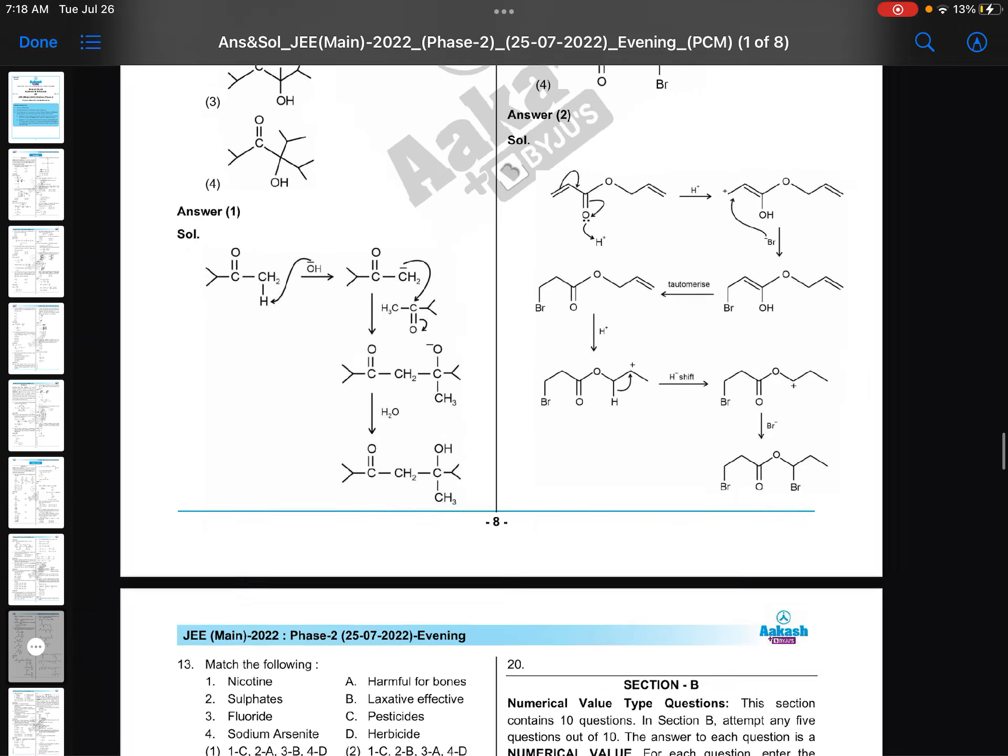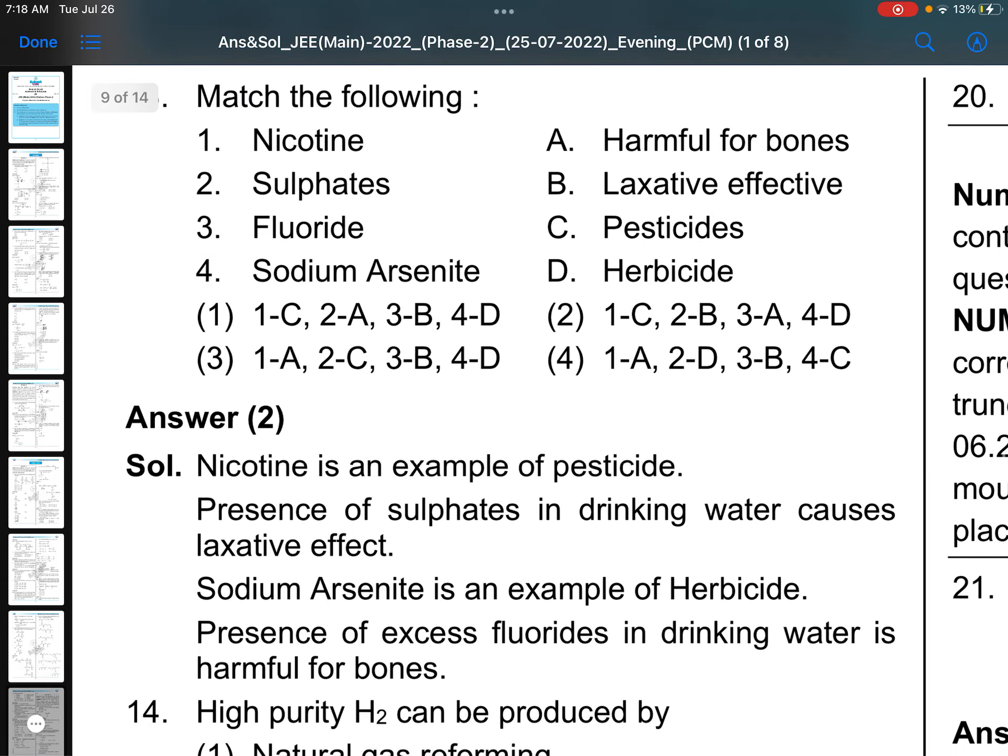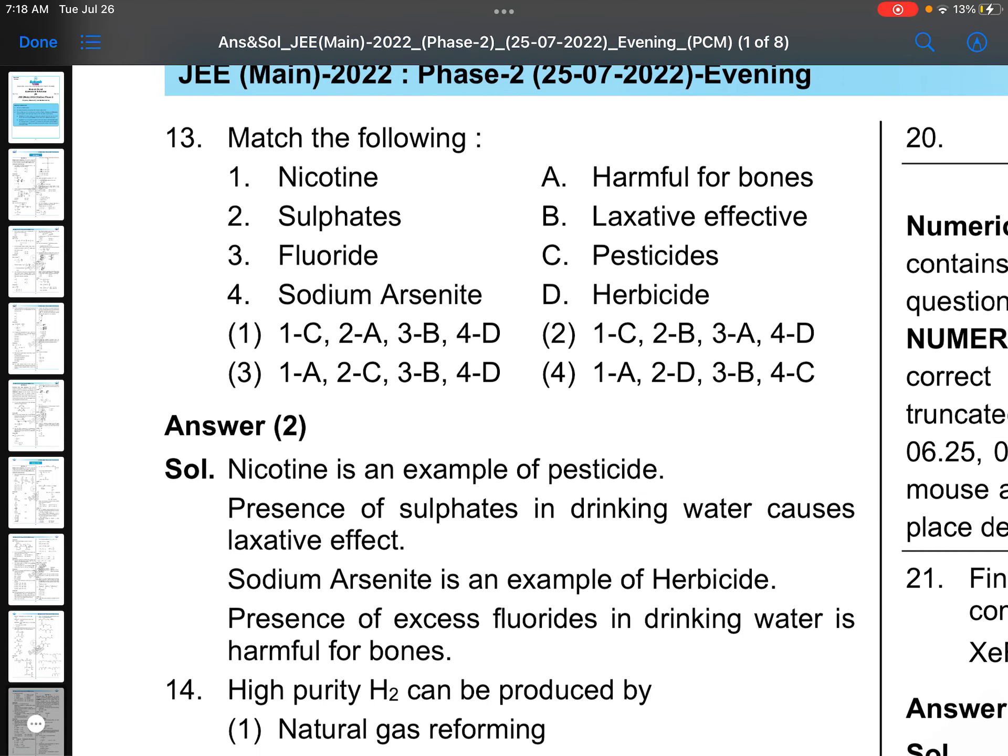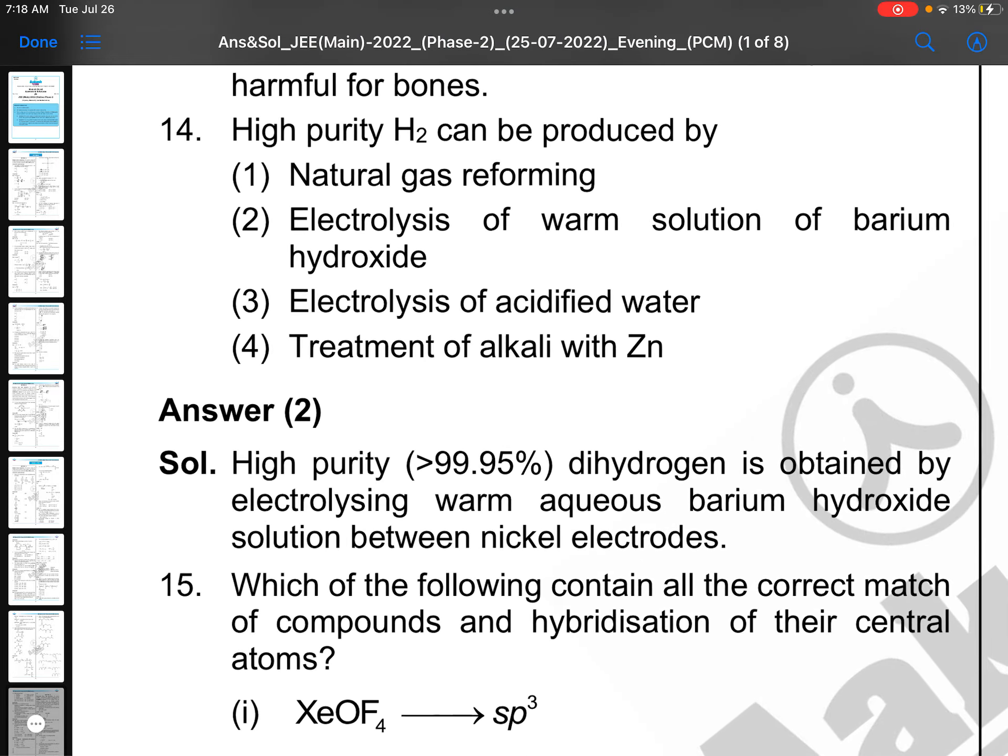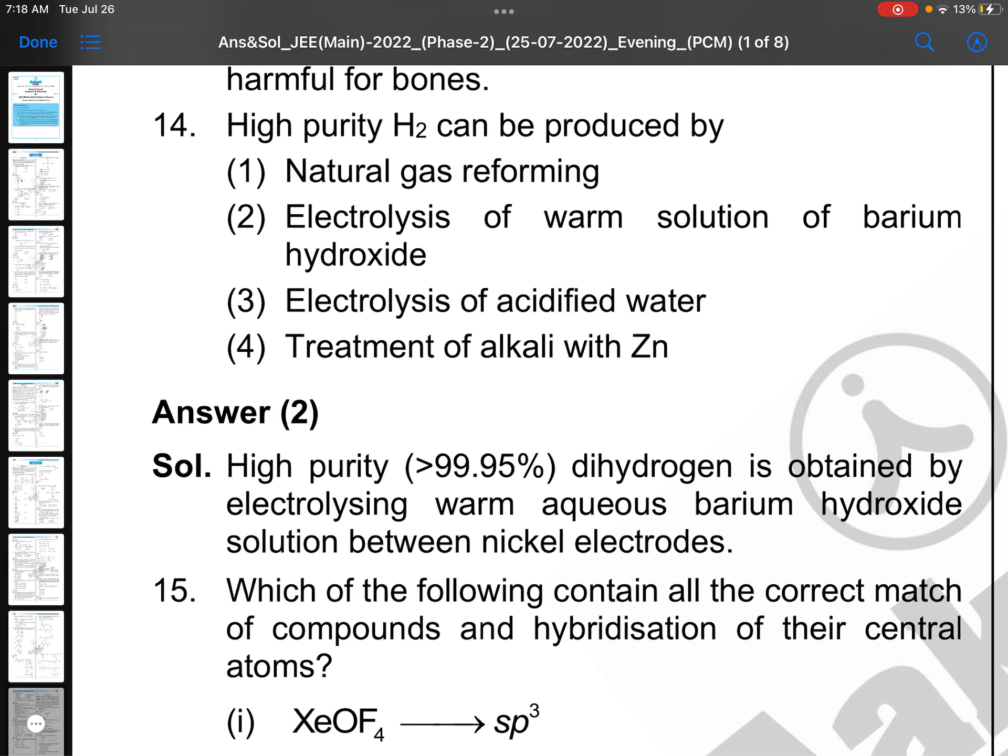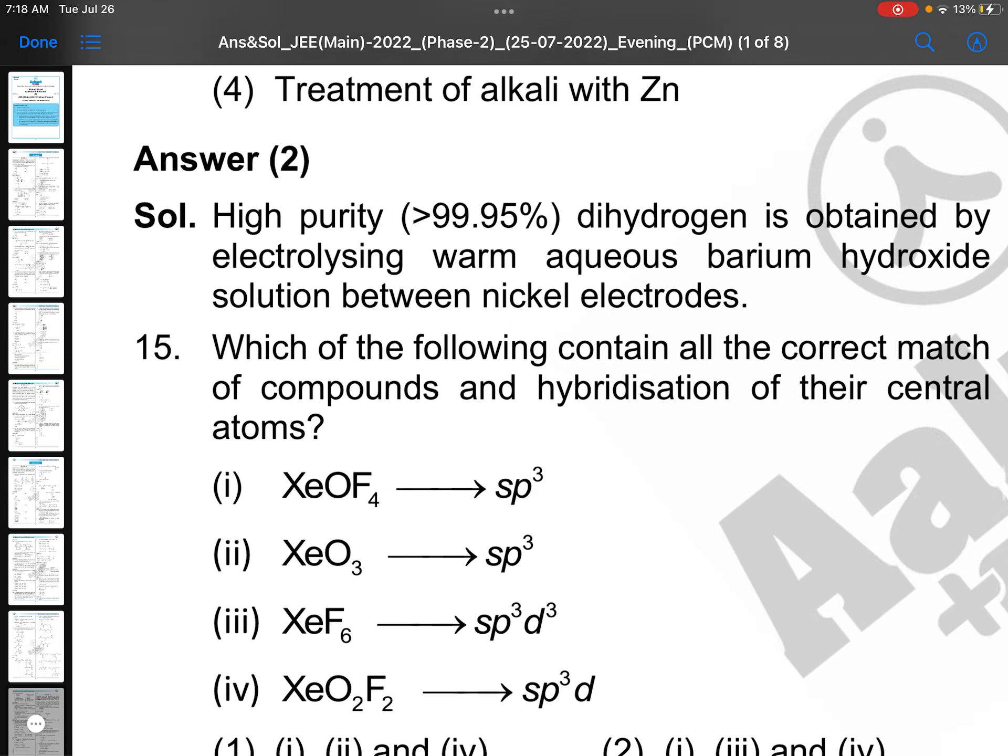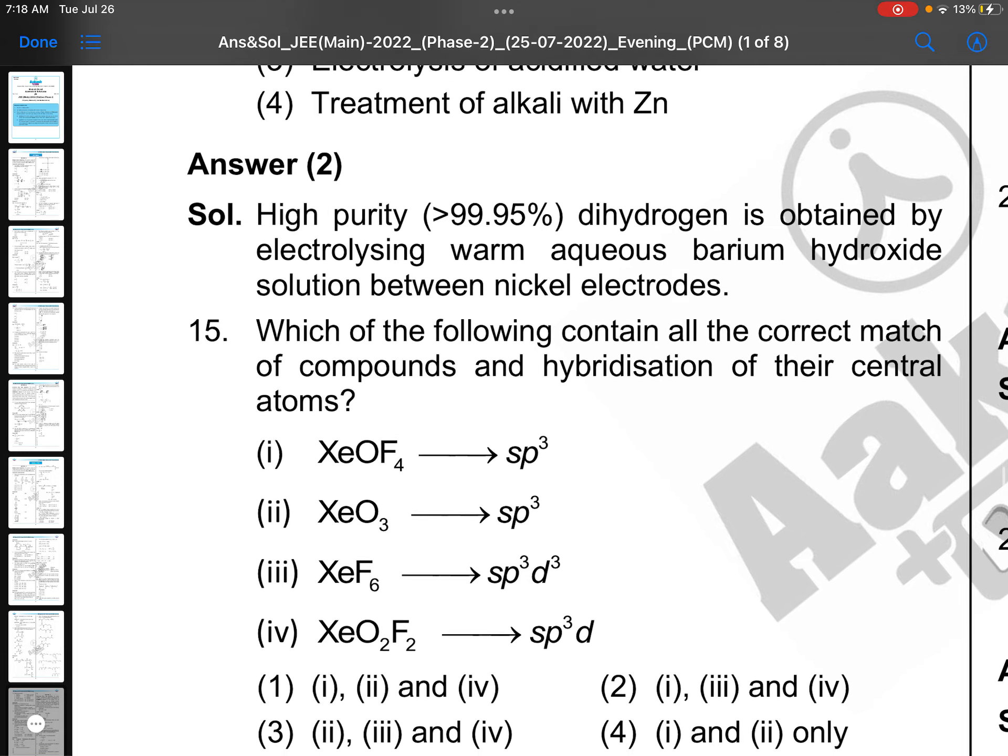Simply you can remember. Nicotine is pesticide, sulfates for laxative effect, fluoride is harmful for bones, sodium arsenate is herbicides. Again memory based. Same logic, no need of this. If you are looking at it, it will come. Hydrogen, pure hydrogen can be prepared from barium hydroxide. This is given as it is statement in NCERT book. Electrolysis of warm solution of barium hydroxide, you will be getting there 99.9% pure.